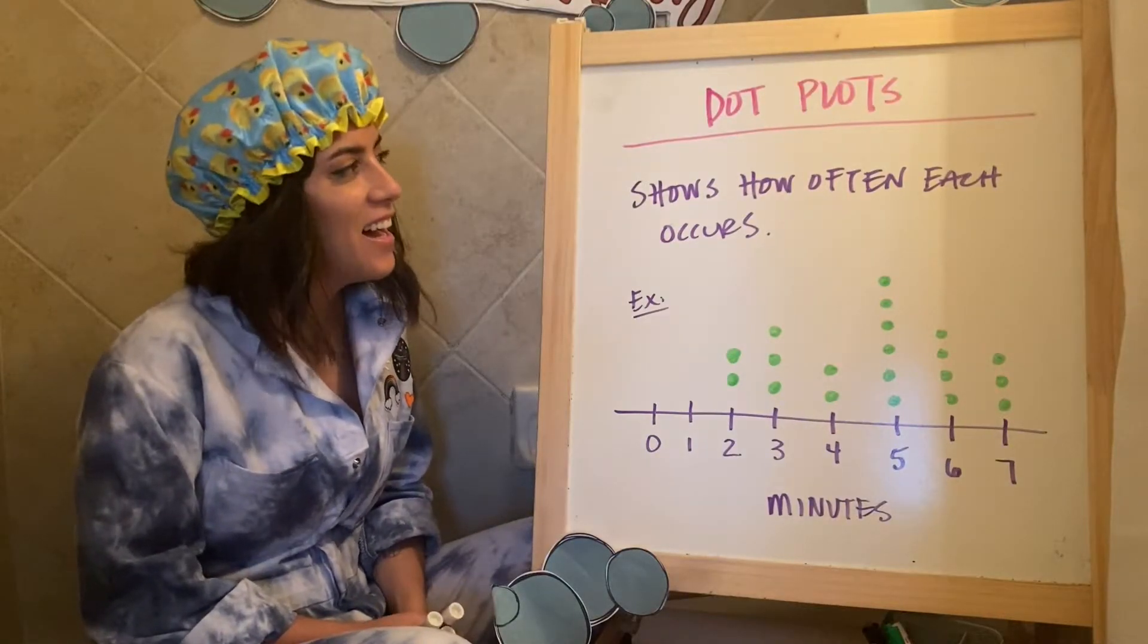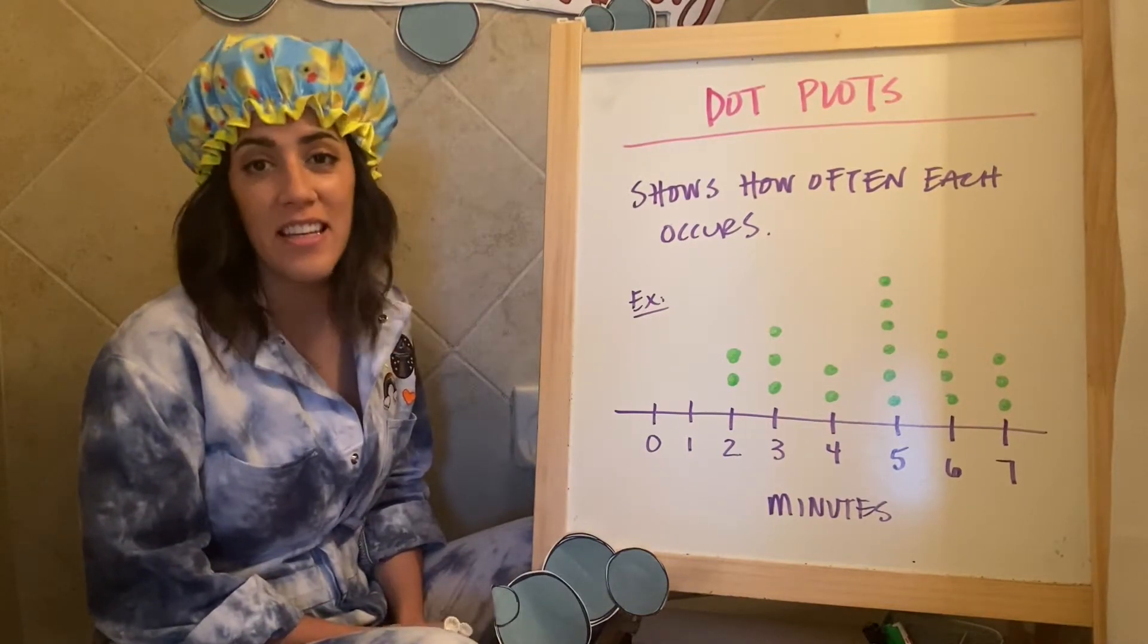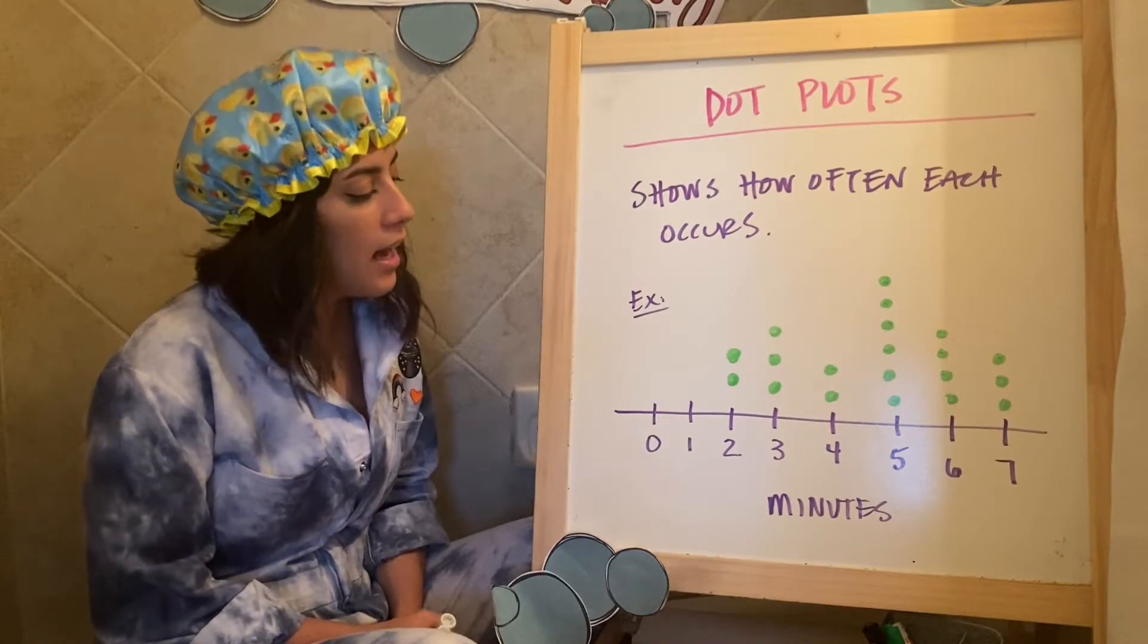Okay. Dot plots are what the name is, shows how often each occurs. It's the same thing as a frequency table. Again, just showing you in a different way.